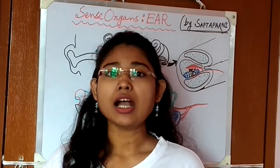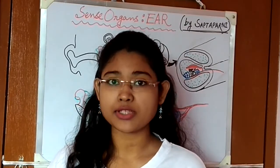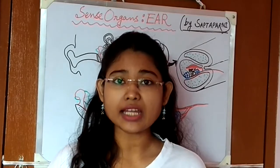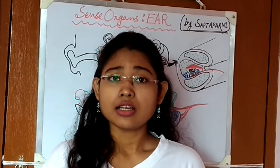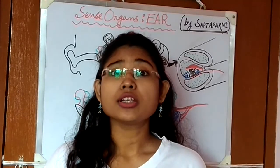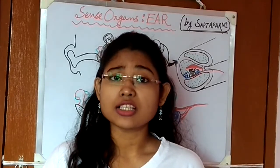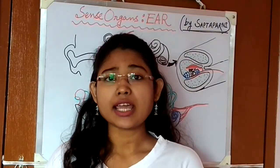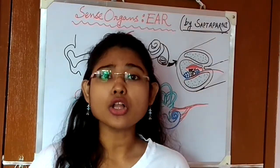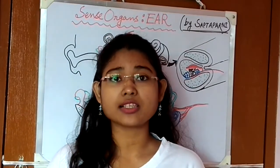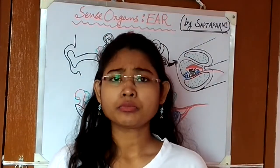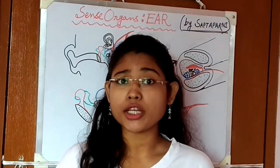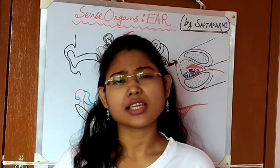We all know that our body has 5 sense organs: eyes, ears, nose, tongue, and skin. And we can sense light, sound, touch, smell, and taste from these sense organs. But except this, there are also other sensations that can be sensed by our body, like pain, thirst, hunger, body movement, balance, etc.